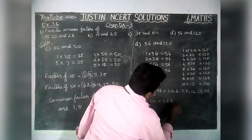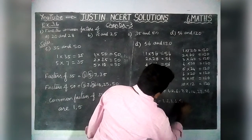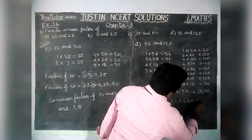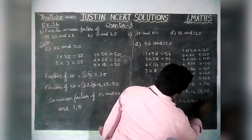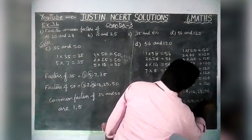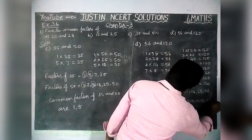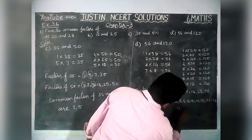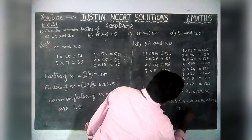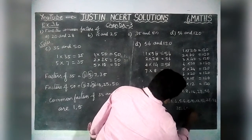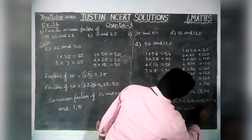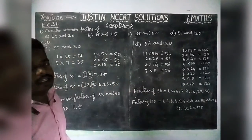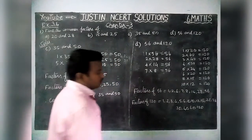Factors of 56 are equal to 1, 2, 4, 7, 8, 14, 28, 56. Factors of 120 are equal to 1, 2, 3, 4, 5, 6, 8, 10, 12, 15, 20, 24, 30, 40, 60, 120. In this we have to find all the common factors.